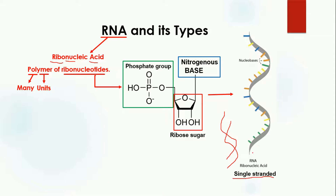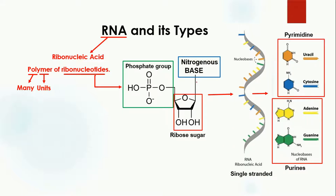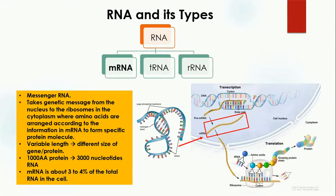The nitrogenous bases present in RNA are divided into two types: pyrimidines and purines. The purines in RNA and DNA are the same — adenine and guanine. For pyrimidines, cytosine is present in both RNA and DNA. However, the fourth base is different: in RNA it is uracil, while in DNA thymine is present in place of uracil. So the nitrogenous bases in RNA are uracil, cytosine, adenine, and guanine.